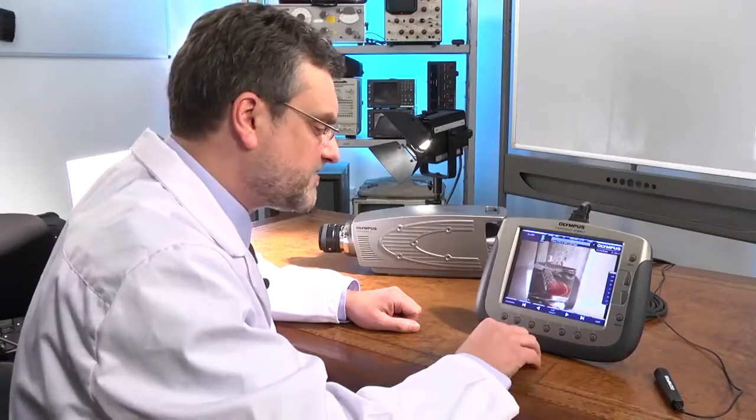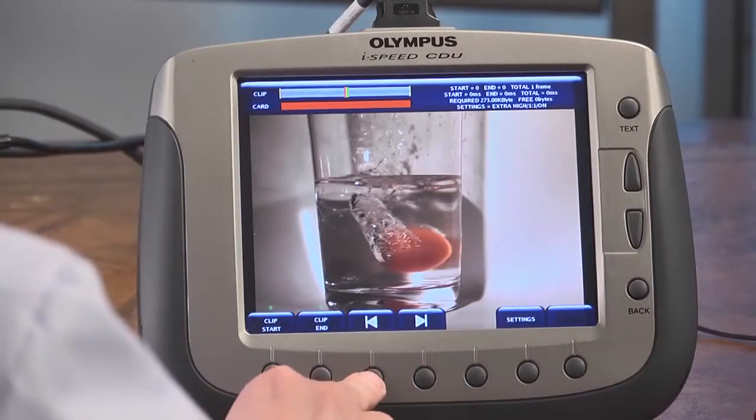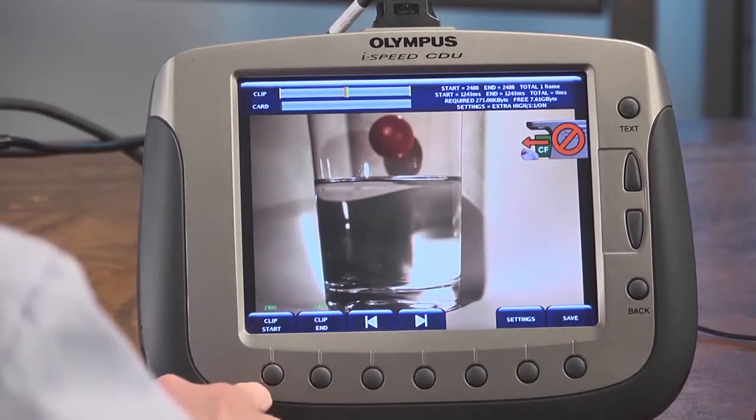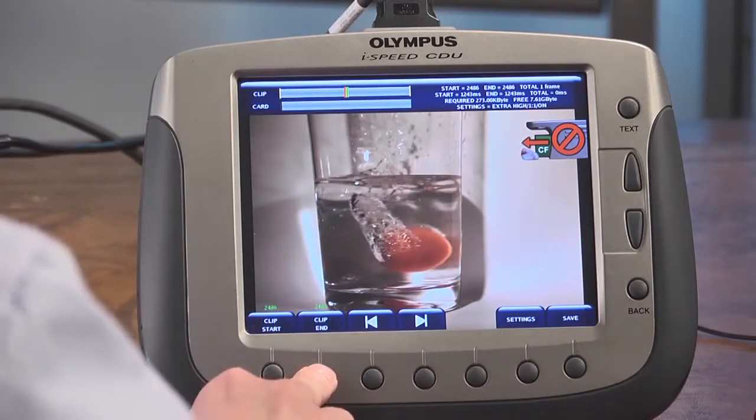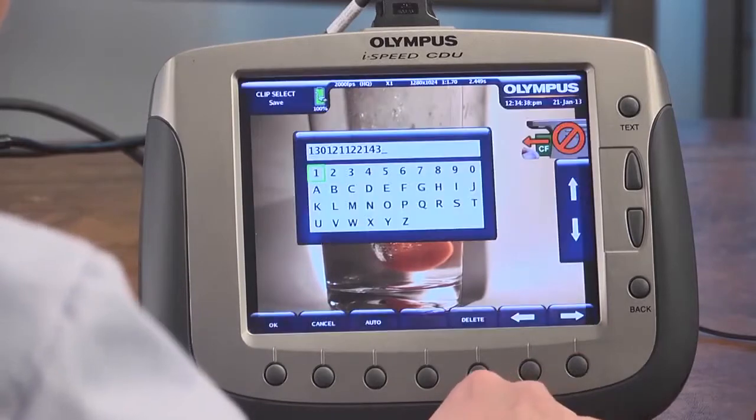Now I'd like to save that video onto a compact flash card. Let's press the clip select button. Let's move to the start of the event. I'll press clip start. Let's move to the end of the event, and I can press clip end, and then I can start the save process.